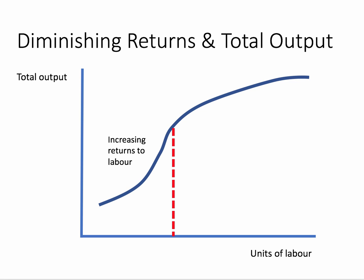We can also show this in terms of total output. When marginal product is going up, the gradient of the total output curve is rising. But when marginal product is falling from the fourth worker onwards, total output is still increasing, but at a decreasing rate — the total output curve has a shallower gradient. Eventually, the next worker might add nothing to production, in which case marginal product would be zero.